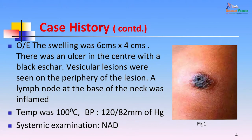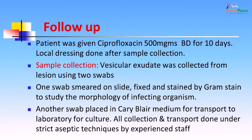The picture shows the malignant pustule as it was seen at the time of arrival. You can see the black scar and the vesicles around it. The patient was given ciprofloxacin 500 milligrams BD for 10 days. Local dressings were done after sample collection. The sample collected was vesicular exudate, collected from the lesion using two swabs.